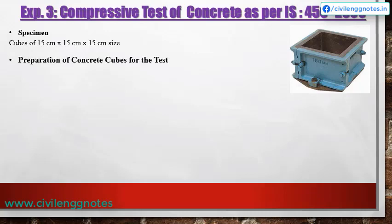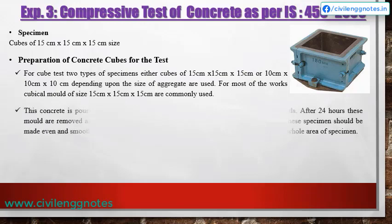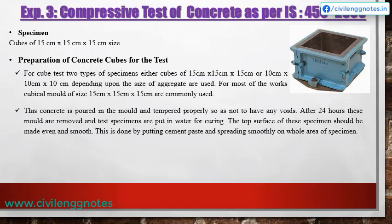For cube tests, two types of specimens — cubes of 15 cm or 10 cm depending upon the size of aggregate — are used. Cubical molds of size 15 cm are commonly used. The concrete is poured in the mold and tempered properly so as to have no voids. After 24 hours, molds are removed and test specimens are put in water for curing. The top surface of the specimens should be made even and smooth by putting cement paste and spreading smoothly over the whole area.